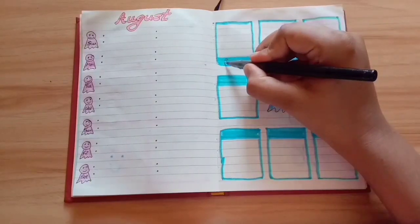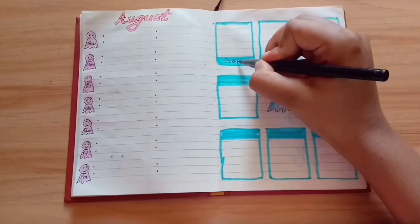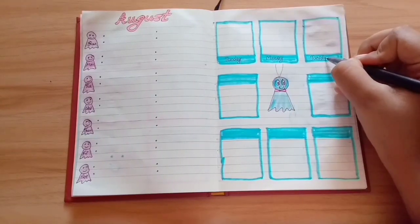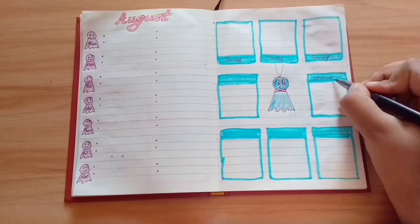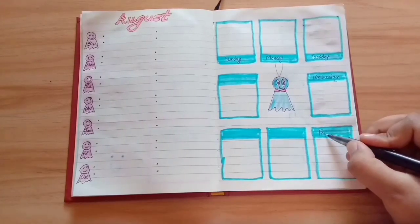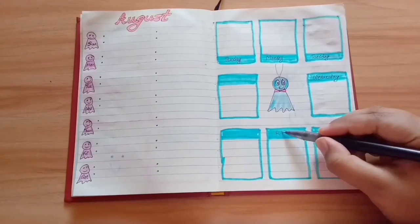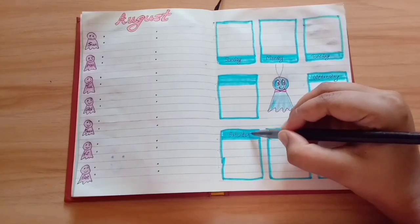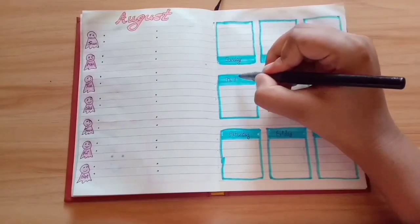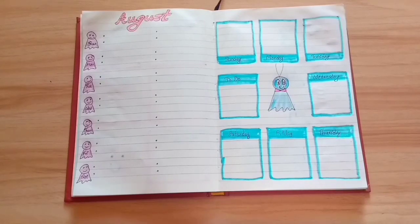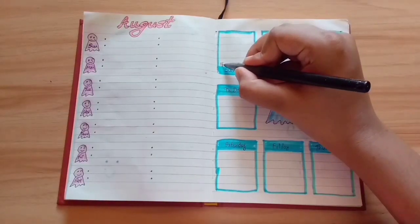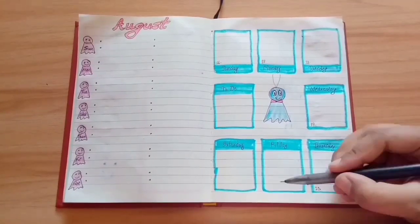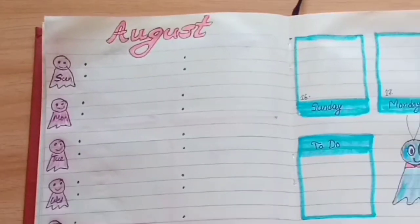At the bottom box you can make a little note section to write some of the important events that might occur in that week. With this we complete our another five minute weekly spread.